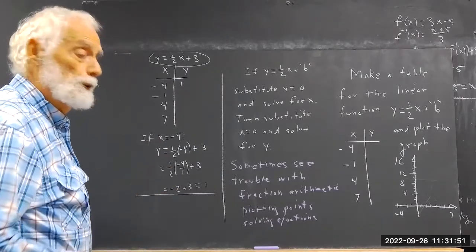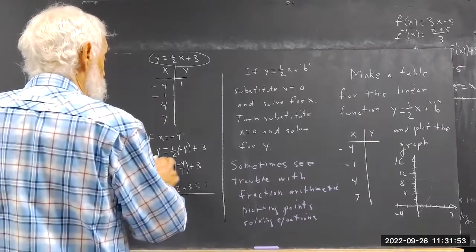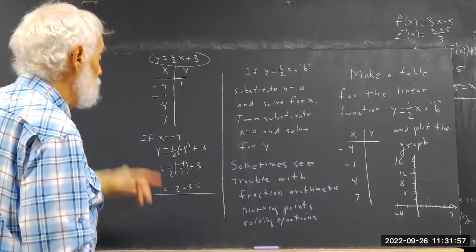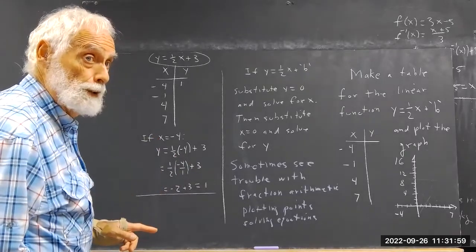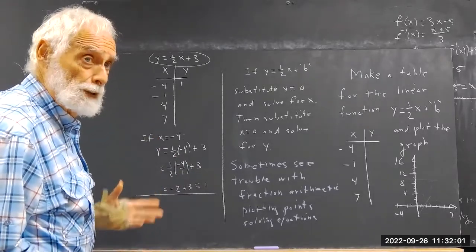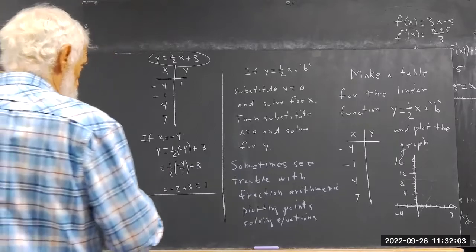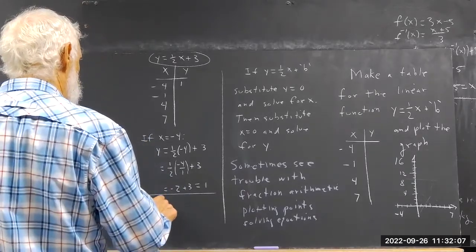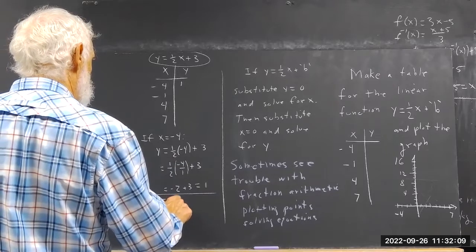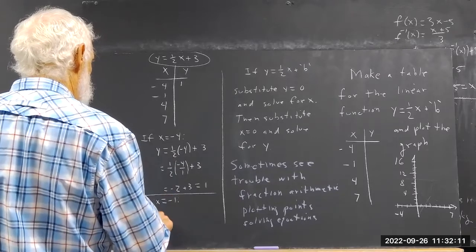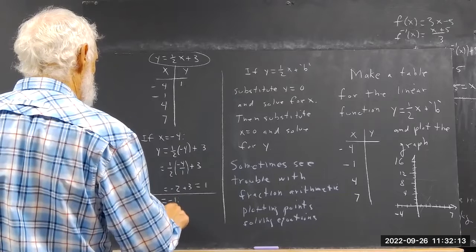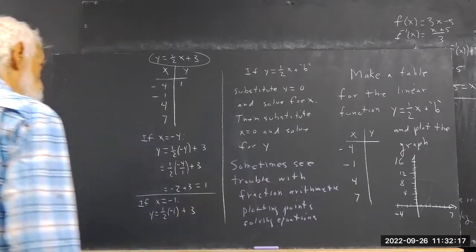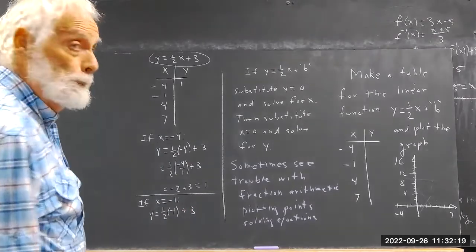You simply have to know how to multiply fractions. 1 times negative 4 is negative 4, 2 times 1 is 2. You get negative 4 over 2, and that's negative 2. I'm going to include all the steps here. And y equals 1/2 times negative 1, plus 3.